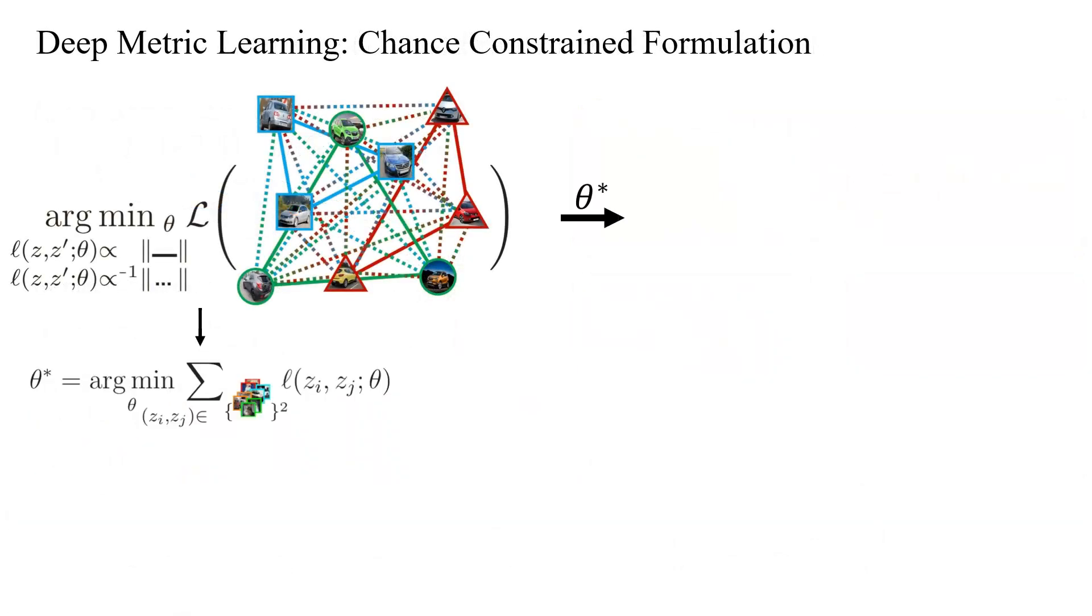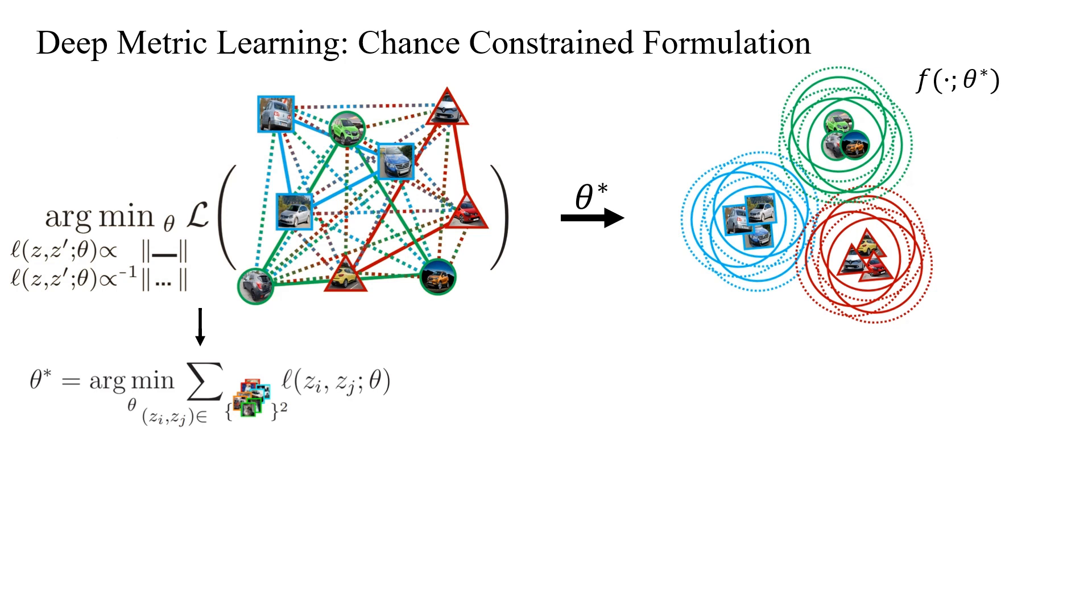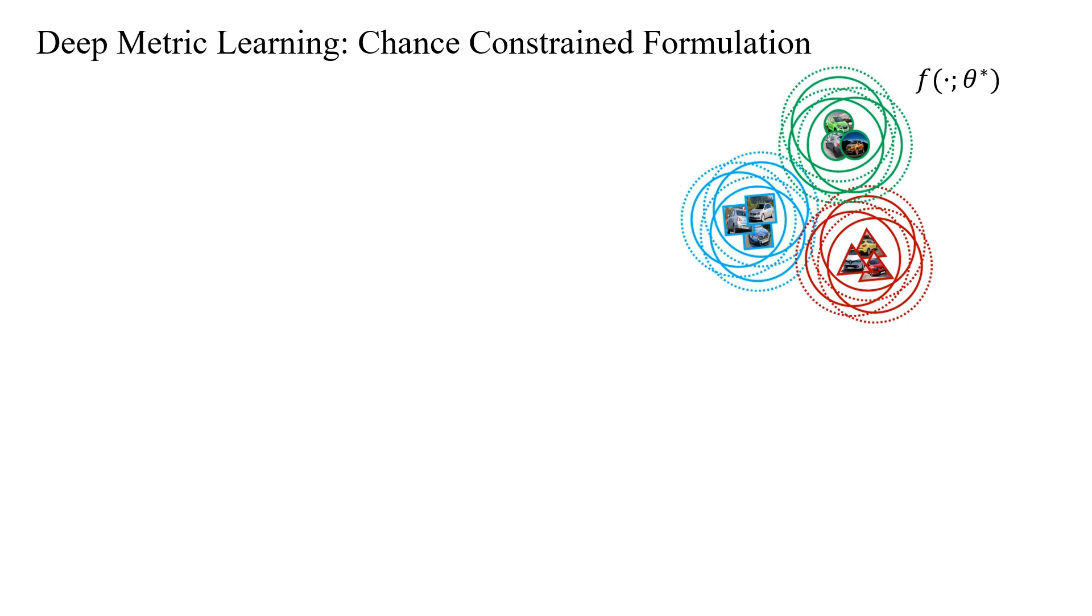We begin by offering a fresh perspective on metric learning, highlighting that minimizing pair losses inherently shapes an embedding geometry. But let's take a step back. To explicitly enforce this geometry, we reframe the metric learning problem as a feasibility problem with chance constraints.